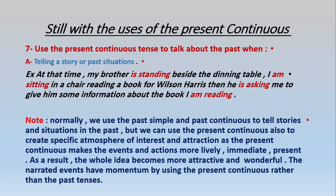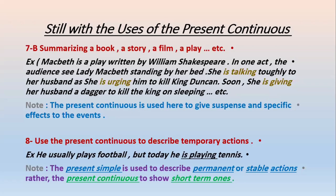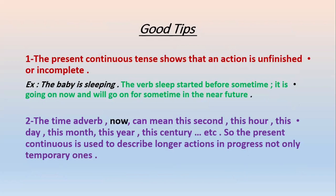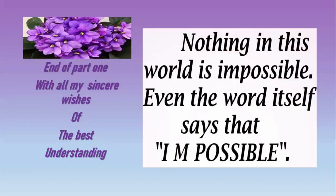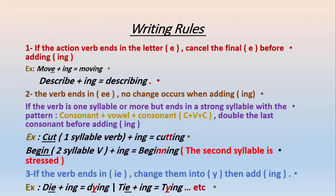We use the present continuous to give momentum and make the story more interesting and near to the present. The present continuous is about the progress of an action. For example, 'I am reading a book' — I started reading a few minutes ago in the past, I'm reading now in the present, and I will read shortly in the near future. The action is not finished or complete.